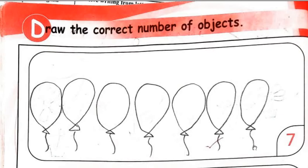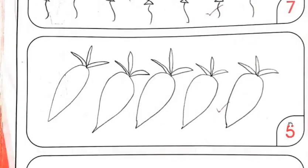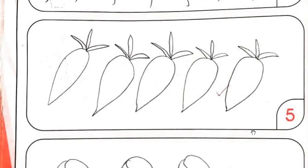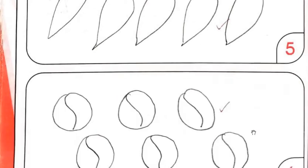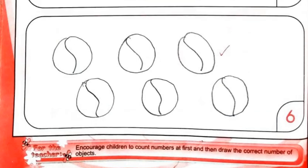Second one is number 5. Isi tarah number 5 pe aap kuch bhi apni pasand kar draw kar sakti hain — ye carrots hain, aap kuch bhi draw kar lein: flowers, sun, trees — whatever you like. Next one is number 6, so here are six balls. You can draw anything you like.